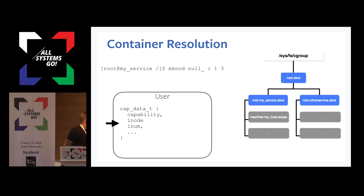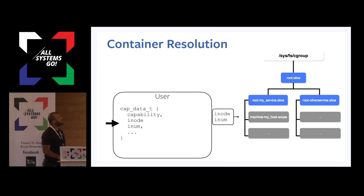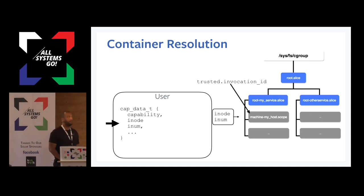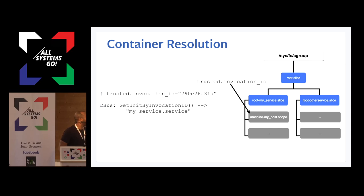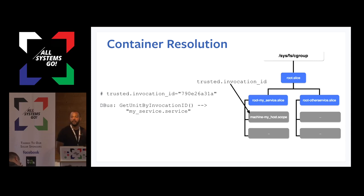CapMondi exports that metadata to user space using BPF. Then we take this metadata — notably the inode and inode number — and basically crawl down SysFS cgroup looking for a match. Once we've found that, we can read the extended attribute that was set by systemd. There's a final step where we do resolution from that UUID to the container it's associated with. In the case of nSpawn, we use a D-Bus API and basically tell systemd to give us the unit name.